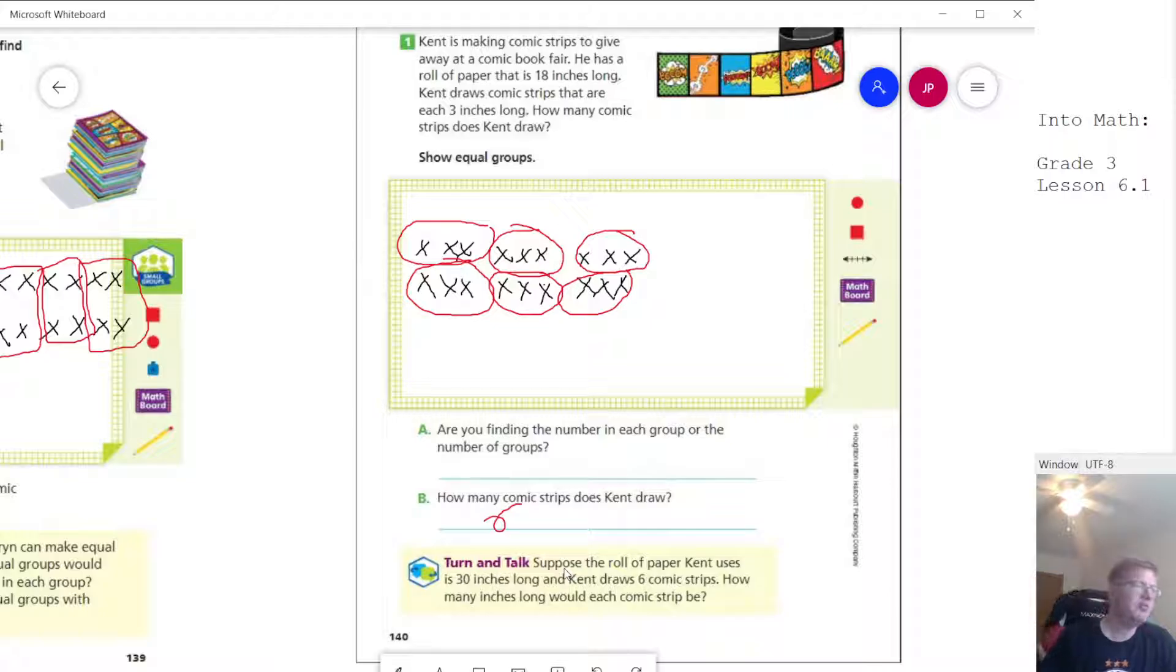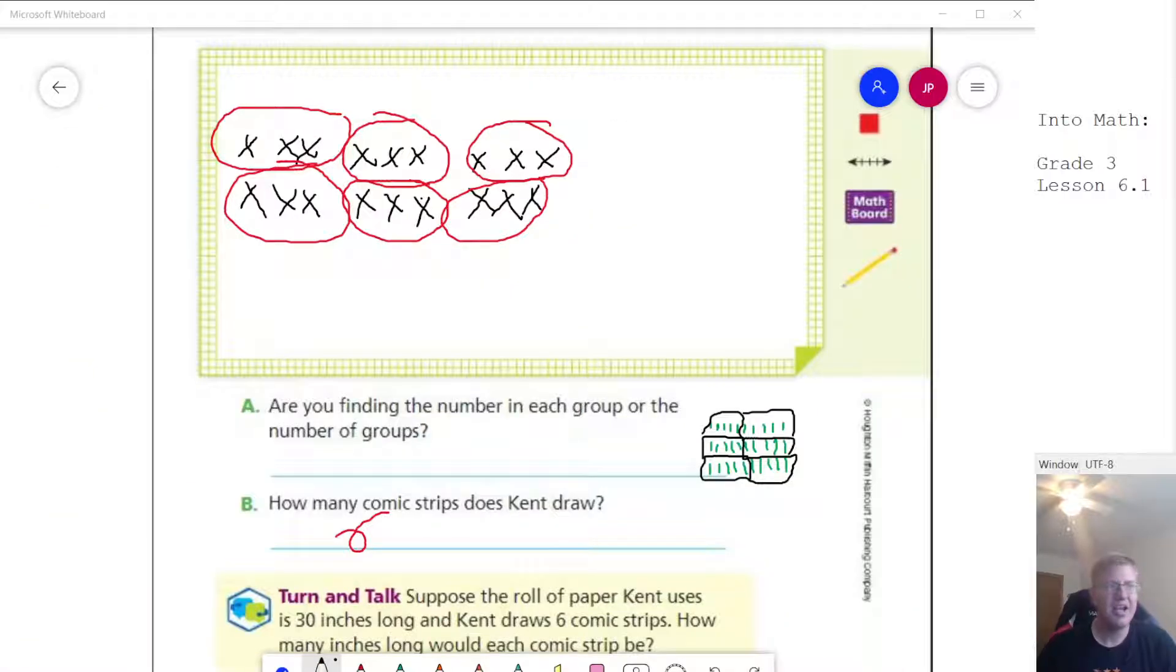What we would do is take 30 counters and break it up into six equal groups, and then the number of counters would represent each inch. Then we would be able to find that. I'm going to pause real quick and show you a picture of what that would look like, and then we'll talk about that.